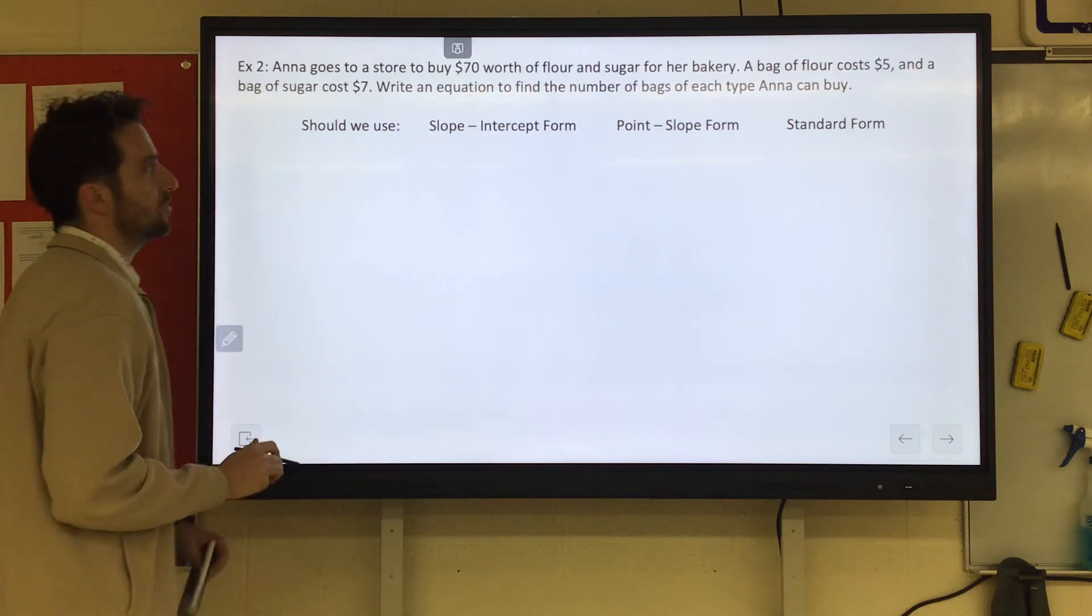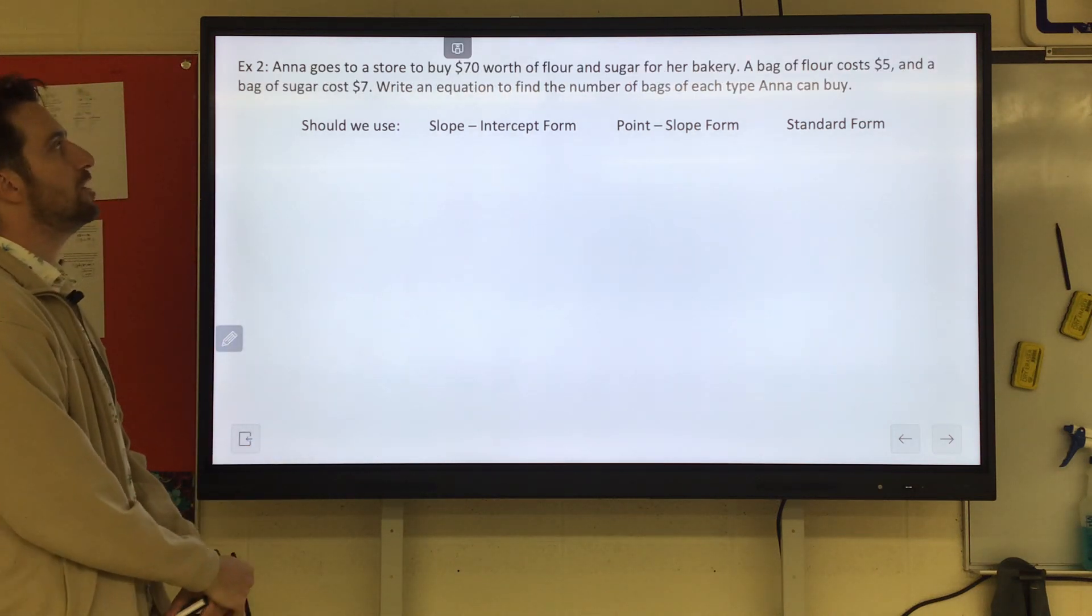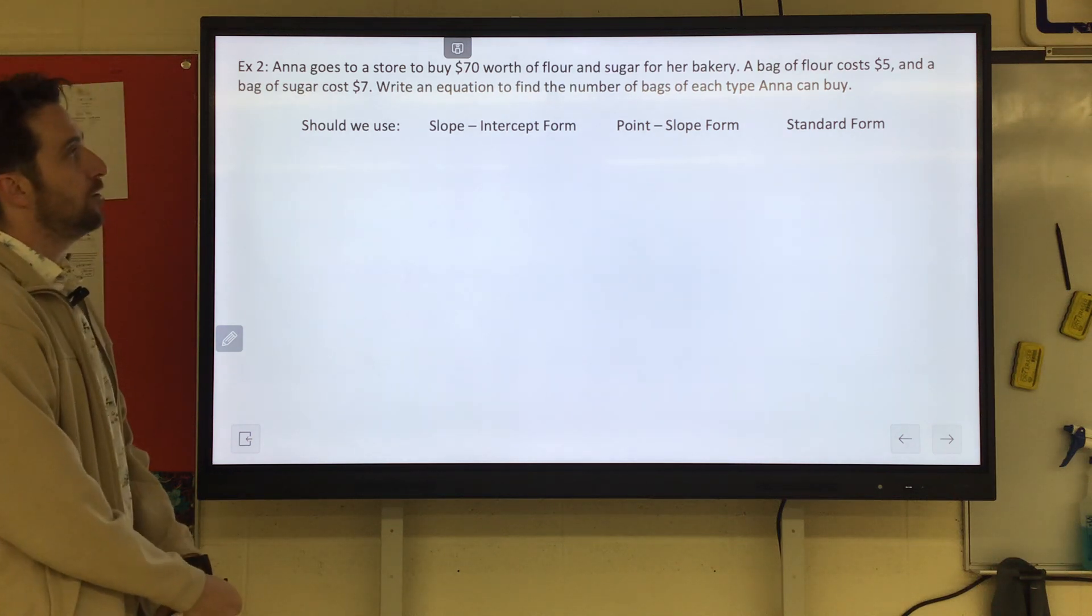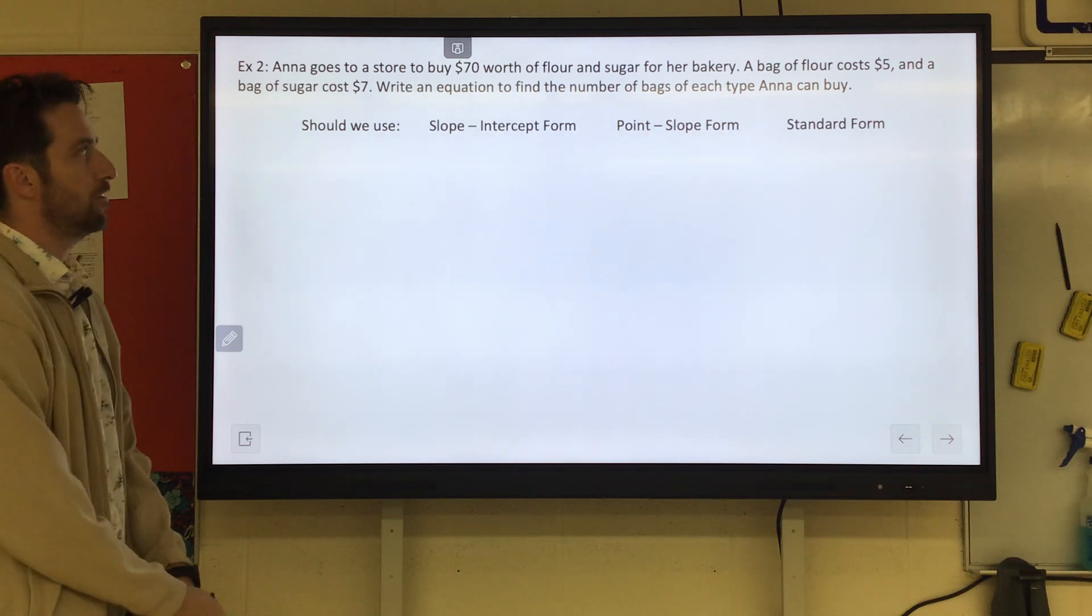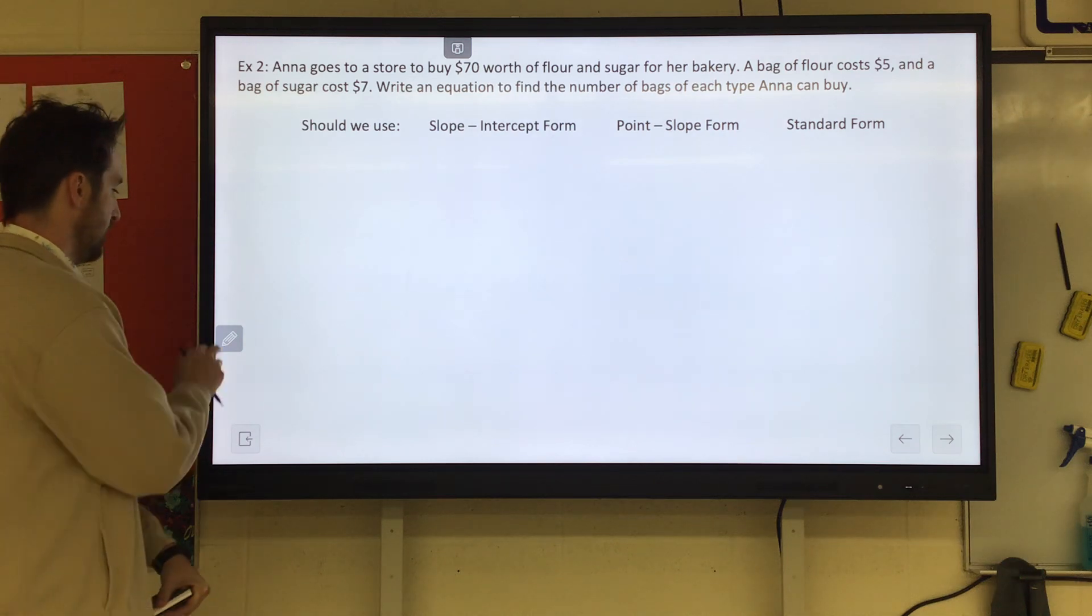Cool. There it was, slope-intercept form. Anna goes to a store to buy $70 worth of flour and sugar for her bakery. A bag of flour costs $5. A bag of sugar costs $7. Write an equation to find the number of bags of each type Anna can buy.